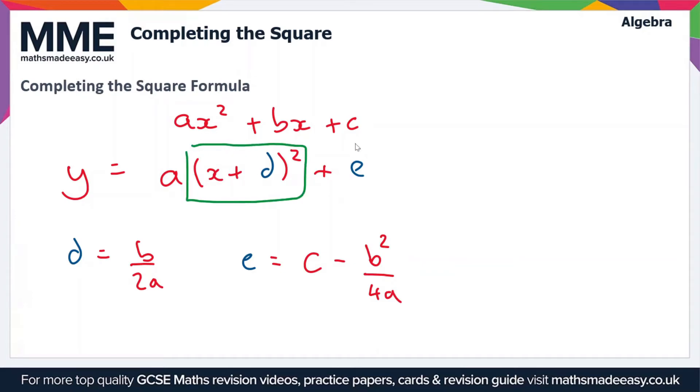So if x + d is negative, when we square it, it becomes positive. And if x + d is already positive, when we square it, it stays positive. So that means that the smallest value that (x + d)² can be is just 0, and that happens when x equals -d.